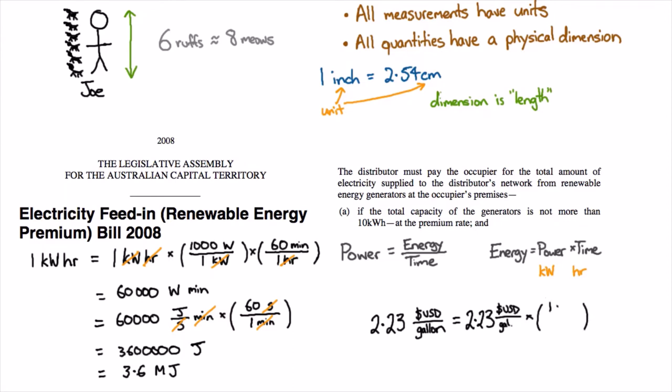So I want the gallon on the top so it cancels with the gallon on the bottom and one gallon it turns out is worth 3.785 litres.